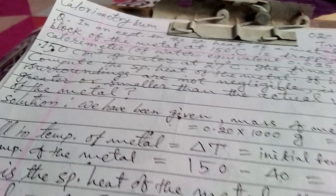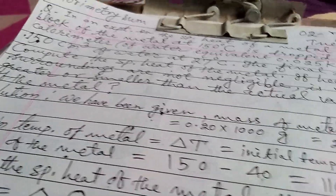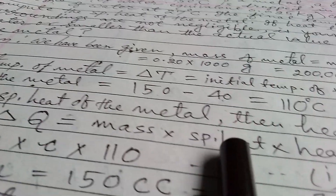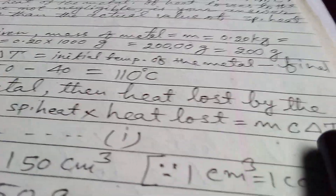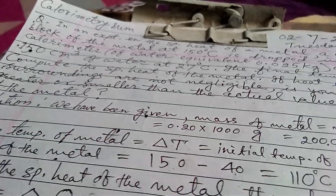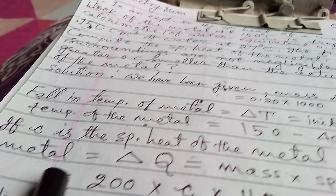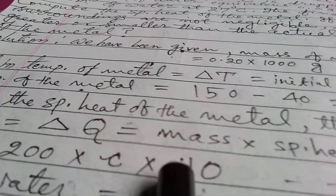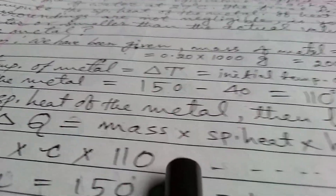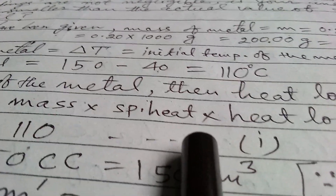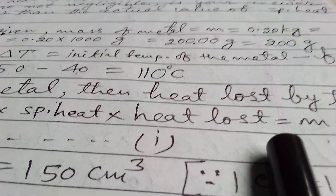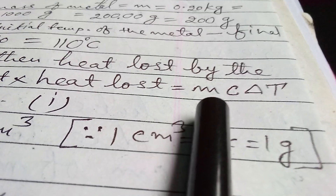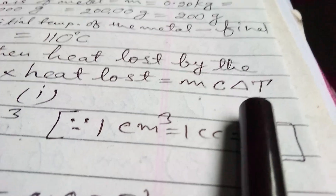If C is the specific heat of the metal, then heat lost by the metal is delta Q, that equals to mass into specific heat into temperature change, that is M into C into delta T.